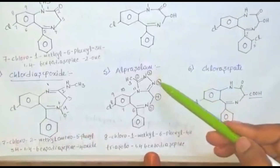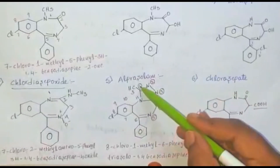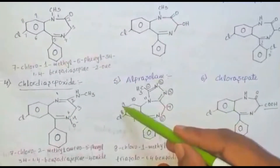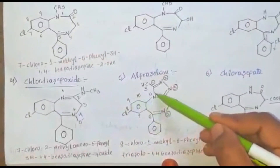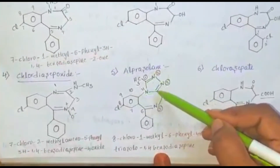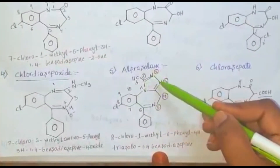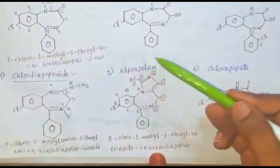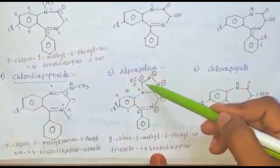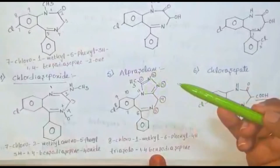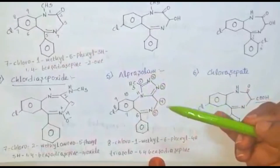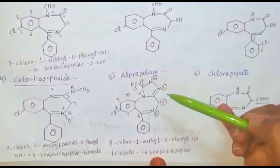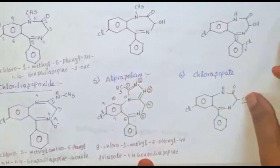Next, alprazolam. The ring numbering is 1 through 11. Alprazolam contains a triazole moiety with 3 nitrogens and a methyl group at the first position. This is called a triazolo 1,4-benzodiazepine. Alprazolam is considered a triazolo 1,4-benzodiazepine.